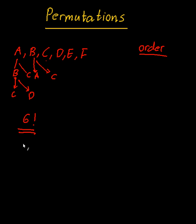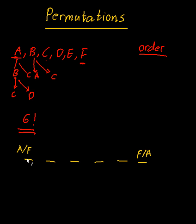Now a harder question: I impose the condition that A and F have to be at either end — in any order, but at either end. I have six gaps. The first one has to be either A or F, and the last one has to be F or A. If there's a special condition, you always deal with it first. There are two ways of arranging A and F at the ends, so the answer is two times four factorial.